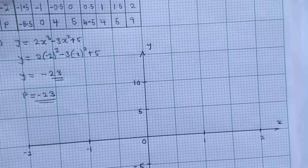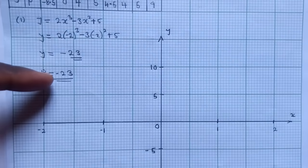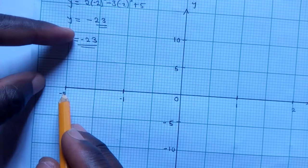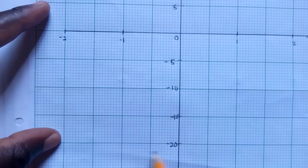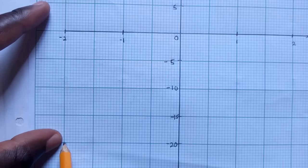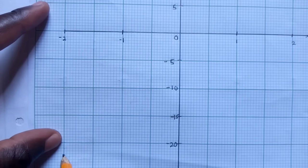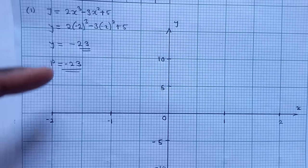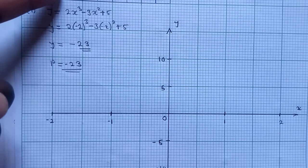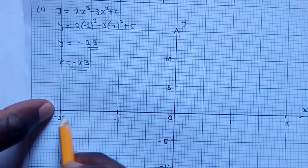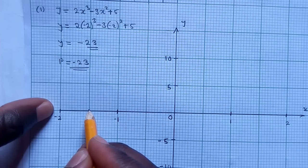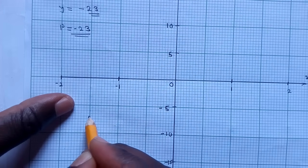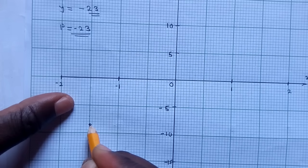Now we can plot the coordinates. We know p is negative 23, so we go to (negative 2, negative 23) — 23 is down at about the 20 mark, then 21, 22, 23, skipping one line. Then we go to negative 1.5: since negative 1 and negative 2 are the bounds, 1.5 is in between. The y value of negative 8.5 — since this is 5, then 6, 7, 8, 8.5 — it's here.